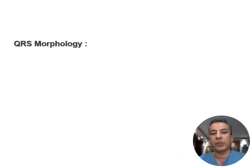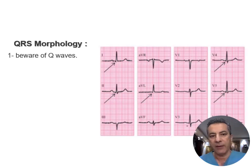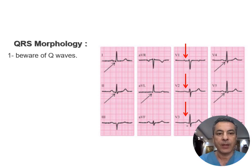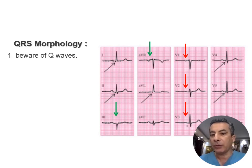After measuring QRS width, shift focus to QRS morphology, paying attention to Q waves. While normal in certain leads, their width should not exceed 30 milliseconds. Abnormalities may arise if Q waves are observed in leads V1 through V3. On the other hand, Q waves can present without restriction in lead III and aVR.